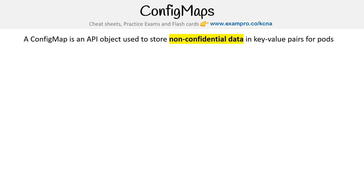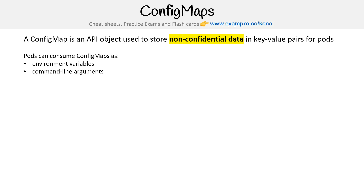Hey, this is Andrew Brown from ExamPro, and we are taking a look at ConfigMaps. ConfigMaps is an API object used to store non-confidential data in key-value pairs for pods. Pods can consume ConfigMaps as environment variables, command line arguments, or configuration files in a volume.